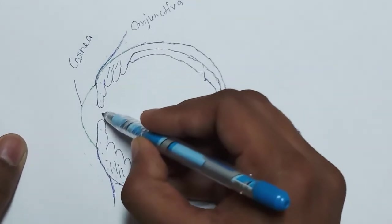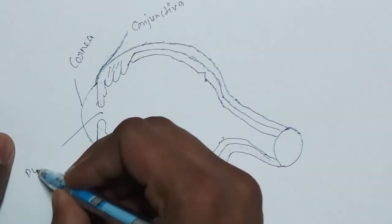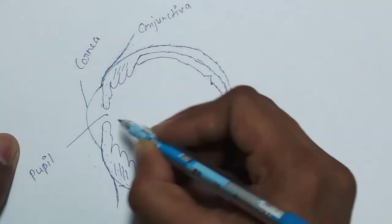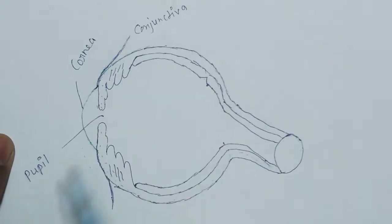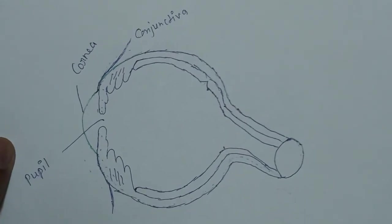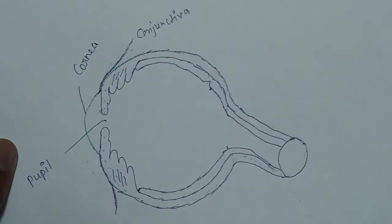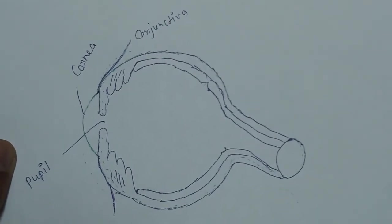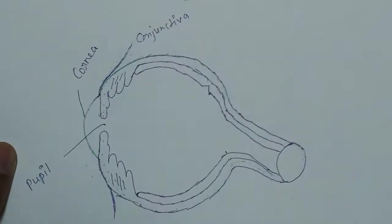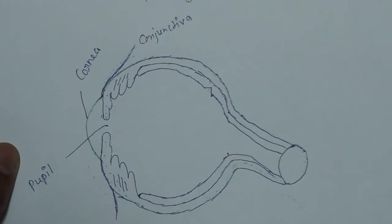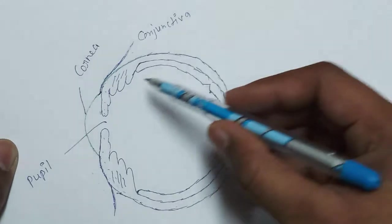This hole is called pupil. Light enters the eyeball by the pupil. The pupil also has a specific function — it controls the amount of light entering the eyeball.